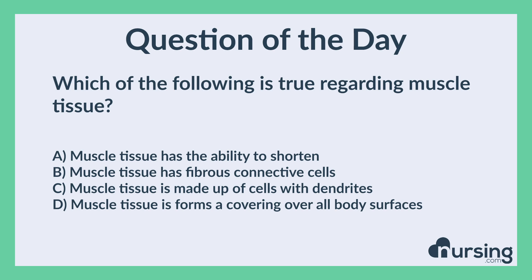Which of the following is true regarding muscle tissue? A. Muscle tissue has the ability to shorten. B. Muscle tissue has fibrous connective cells. C. Muscle tissue is made up of cells with dendrites. D. Muscle tissue forms a covering over all body surfaces.